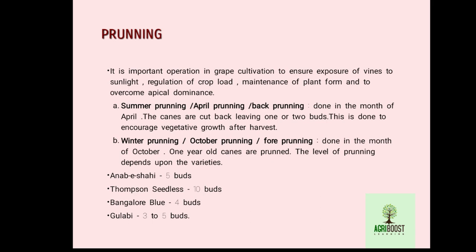Winter pruning is also called October pruning or forward pruning, done in October. In this, one-year-old canes are pruned. The level of pruning depends upon the variety. In Anab-e-Shahi, pruning is done at five bud stage; in Thompson Seedless at ten buds; in Bangalore Blue at four buds; and in Gulabi at three to five buds.